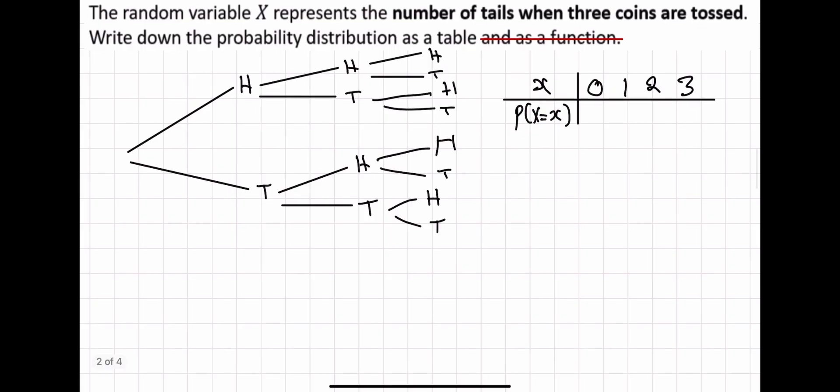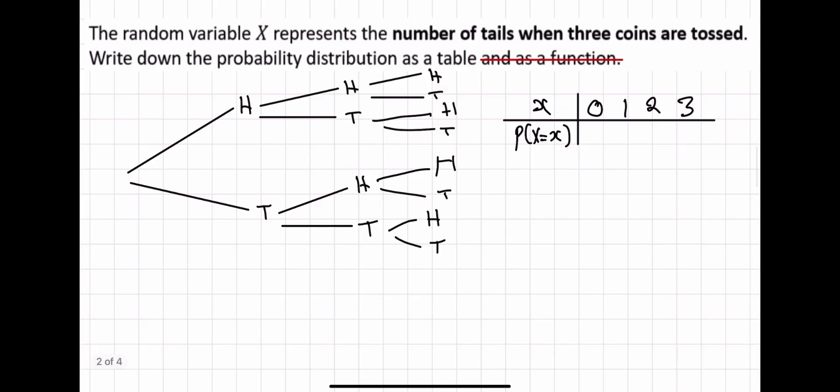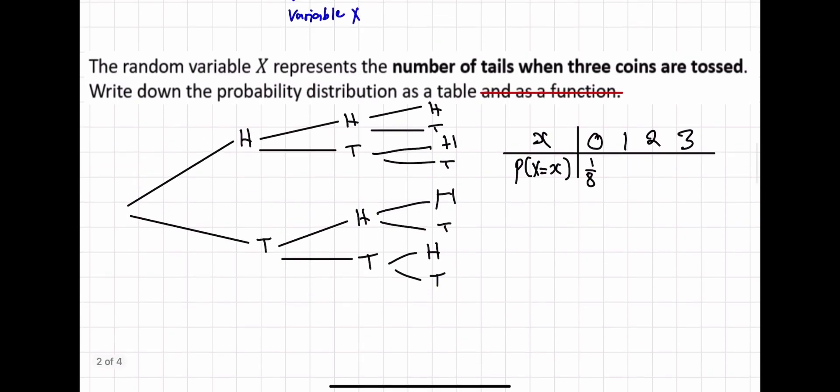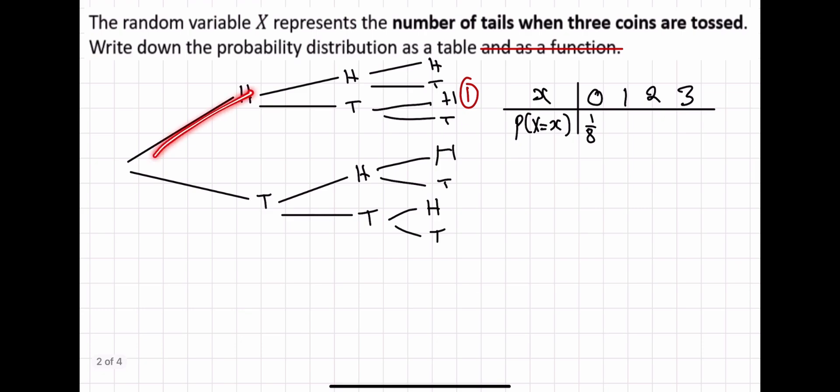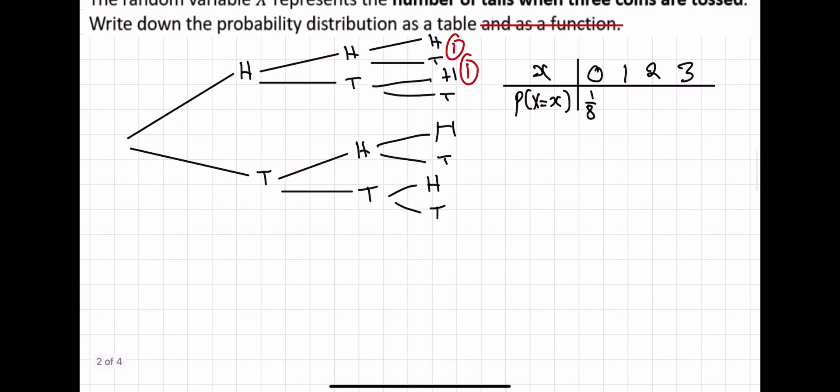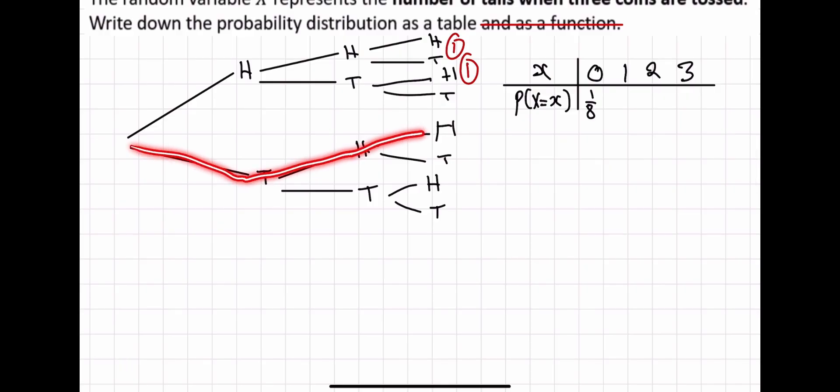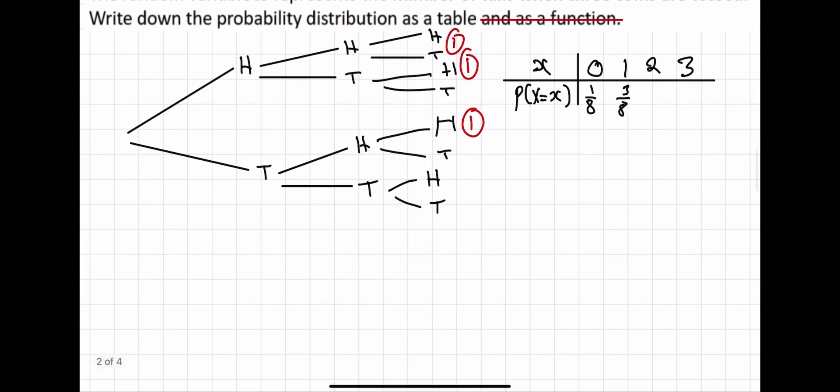So how many ways do you have where you can only get zero tails? Well, that would be if you get a head, a head, and a head. So one. And how many outcomes are there? There's eight. So one out of eight. And how many ways can you only get one tail? So you'd either get a head and a tail and then a head. That's one way, because that's only one tails. Or you can get a head, head, tail. So here's another way. Or you can get a tails and then a head and then a head. So here's another way. So that's three ways out of the eight possible outcomes.